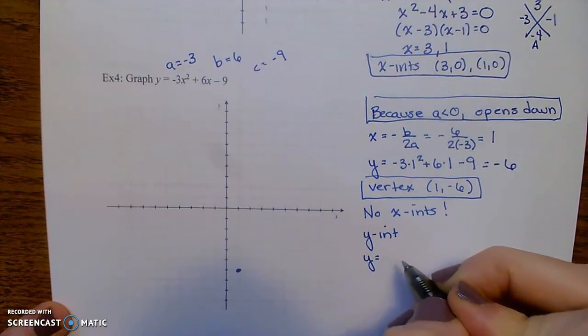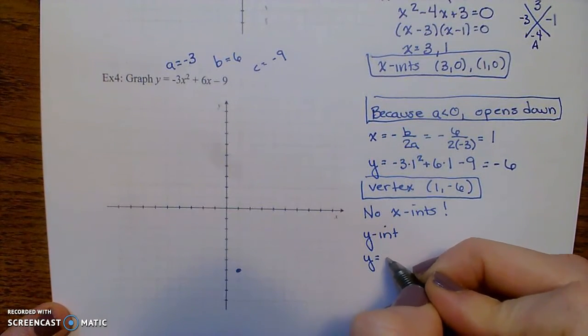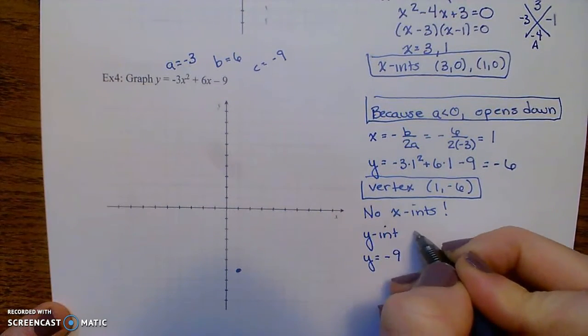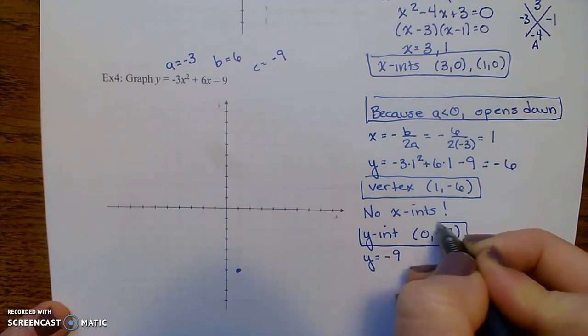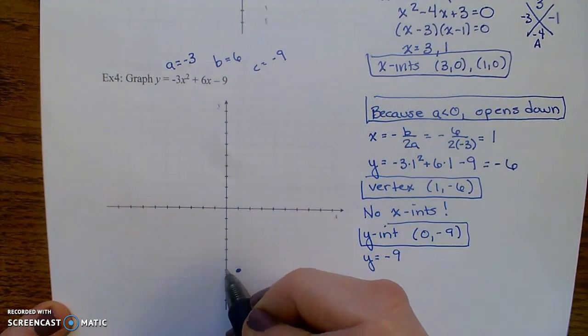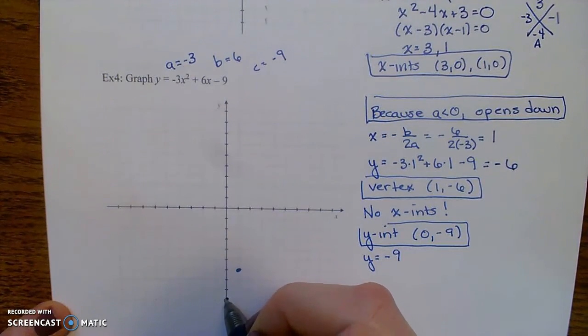y equals negative 3 times 0 squared plus 6 times 0 minus 9. So my y-intercept is 0, negative 9. Let's go ahead and plot that. There it is.